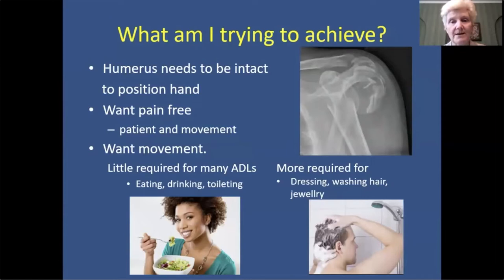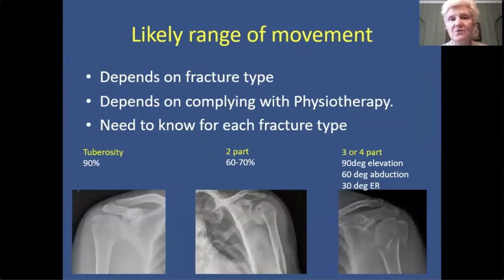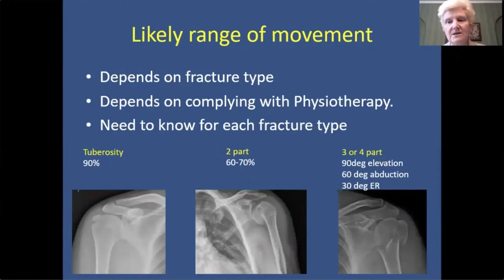You must know what the likely range of movement is that you will achieve for each type of fracture — and getting that will depend on them complying with physiotherapy. With the best physiotherapy, some fractures have a limited range of movement. For a tuberosity fracture, you may expect 90% movement. For a two-part fracture, perhaps 60 to 70%. But when you get to a three- or four-part fracture, even something essentially undisplaced — to get 90 degrees of elevation, 60 degrees of abduction, and 30 degrees of external rotation is about what you might expect, irrespective of what you do.